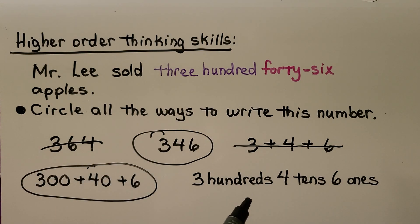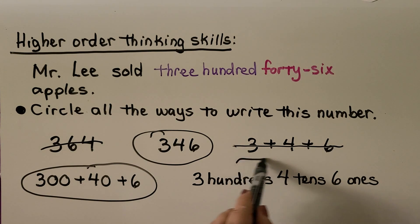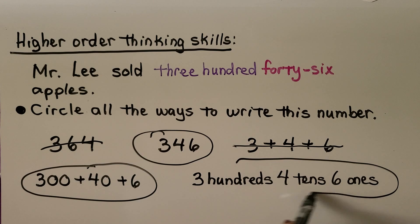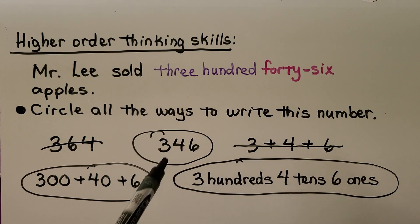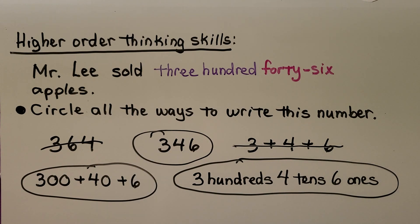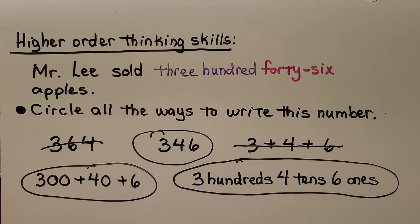Would 'three hundreds, four tens, six ones' be a way to write the number? Yes, that's right. So we can write it as a three-digit number in standard form, in expanded form, and as hundreds, tens, and ones.